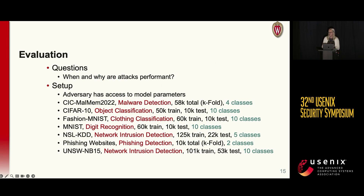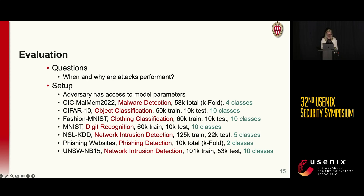Now that we have our 576 attacks, run all of them, got our PEA, and calculated all of the area differences with the PEA for every single one of our attacks, we can now begin our evaluation. In our work, we assume a white-box setting, so the adversary has full access to the model parameters and can perform white-box attacks. We evaluate on seven different datasets spanning a wide variety of different phenomena, including object classification, network intrusion detection, malware detection, and phishing detection.